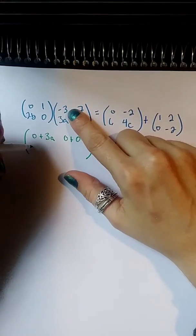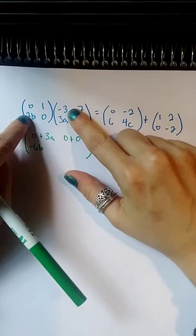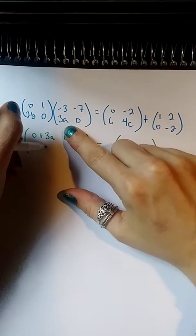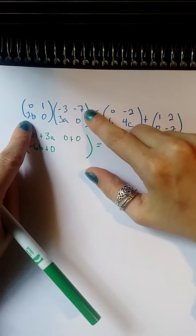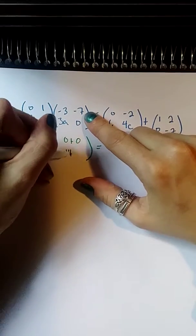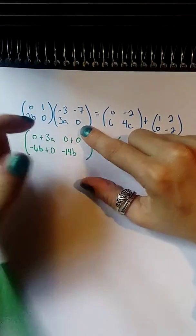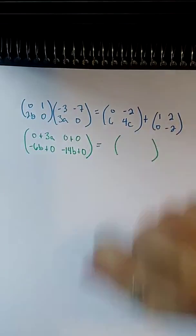2b times -3, -6b, plus 0 times 3a, which is just 0. And then I move to my final column in my final row. 2b times -7, -14b, plus 0.